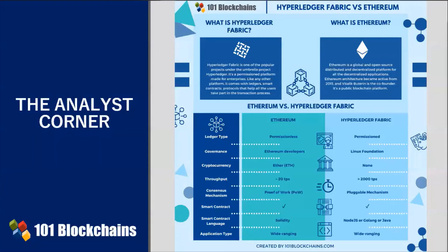Ethereum was the first blockchain protocol to enable the execution of smart contracts, using Solidity as the coding language. Hyperledger Fabric also offers a smart contracts feature known as chaincode. Chaincodes are used to build and execute the business logic of the Hyperledger Fabric platform, and Hyperledger Fabric offers Go, Java, and Node.js to write chaincodes.